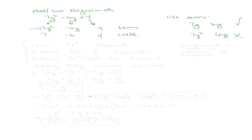Now that we know that, we're going to use the number of terms to define what we call polynomials. These are all polynomials, but we have specific names. If a polynomial has only one term, like 5x cubed, we're going to call that a monomial. Mono meaning one — one term.